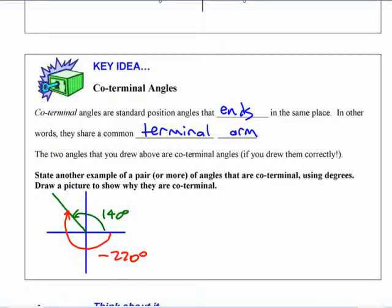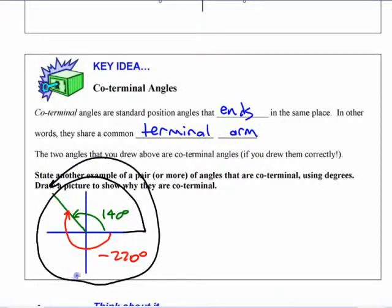Those aren't the only two angles that are coterminal. You could actually have one that goes all the way around and then ends on there. What would that be? Well, it would be 360 to go around once and then another 140. What would it be? 500 degrees. All of those are coterminal. They're coterminal because they all end in that same spot.